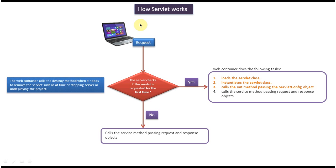In this video tutorial I will cover how servlet works. Here you can see the client sends a request to the server. The server checks if the servlet is requested for the first time. If so, the web container, which is part of the web server, performs the following tasks: first it will load the servlet class, then instantiate the servlet class, then call the init method by passing the ServletConfig object.